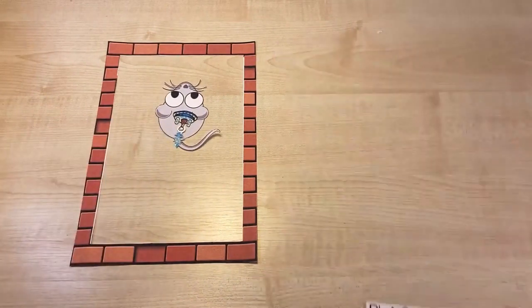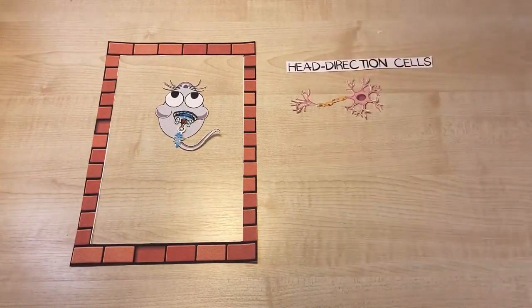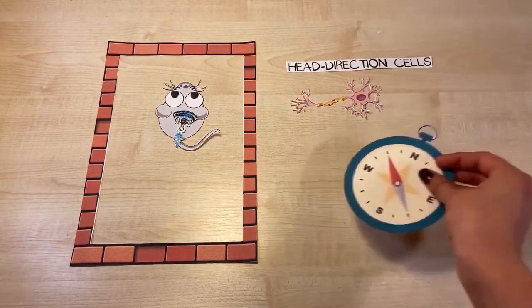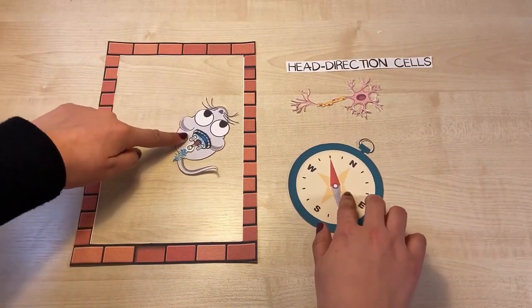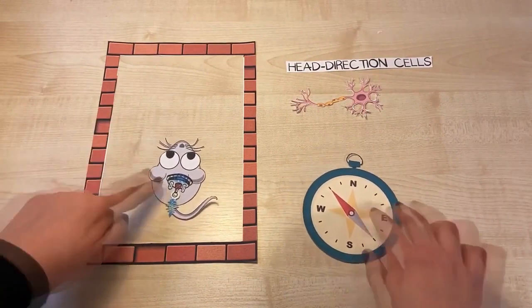Another type of neurons are head direction cells. These cells are next to the hippocampus and they tell us what direction we are facing. They are important to help us reconstruct a scene from a specific point of view.